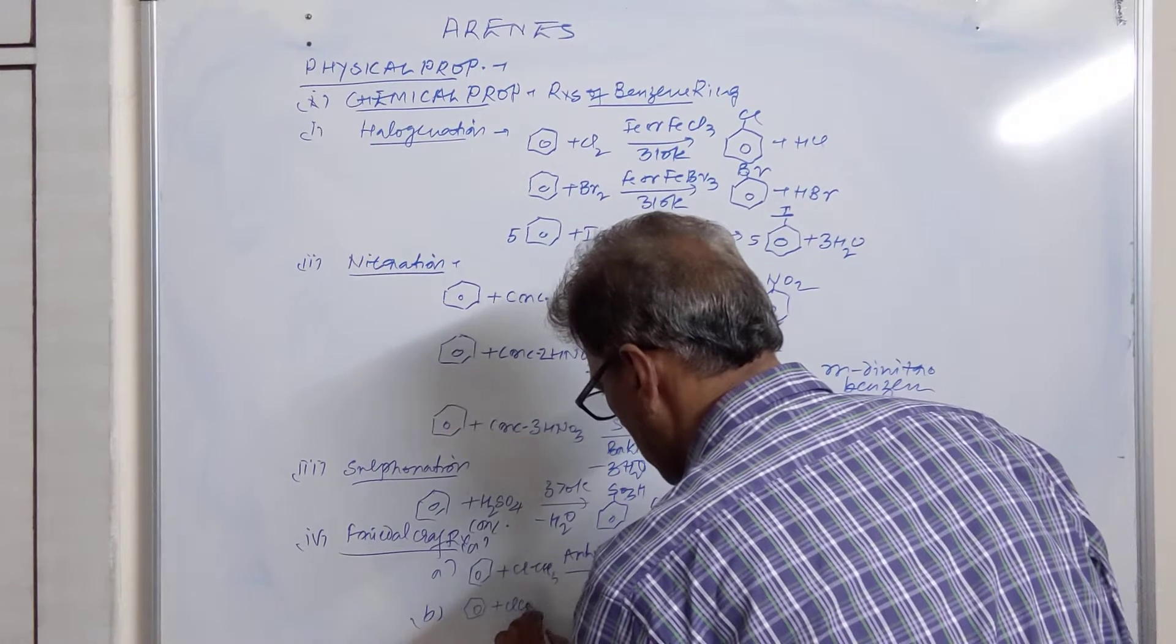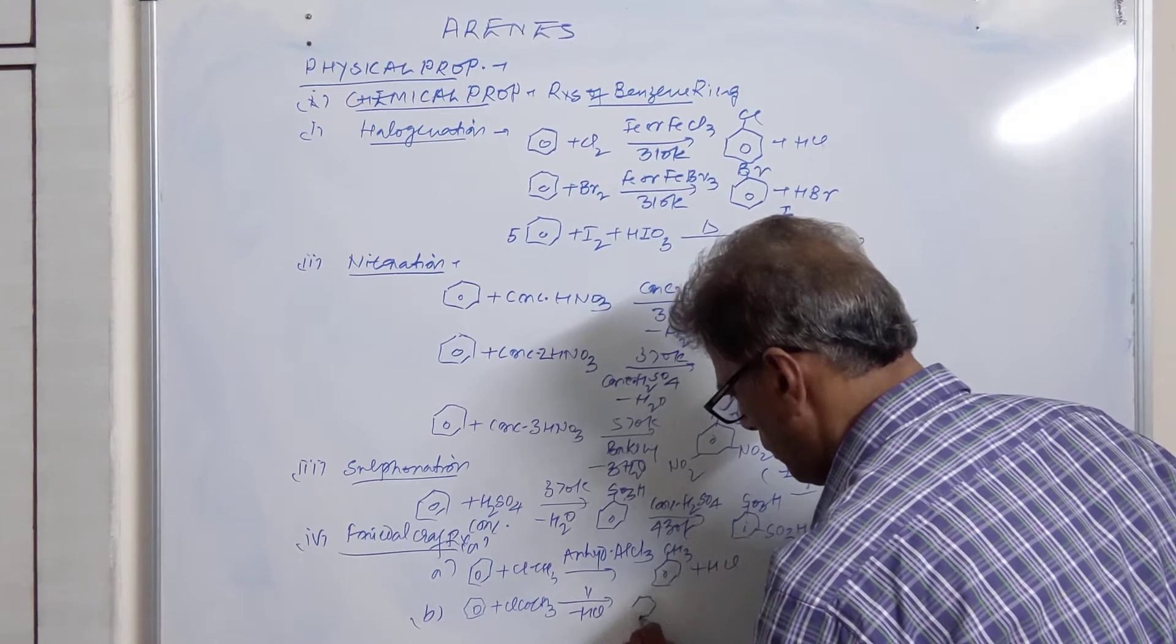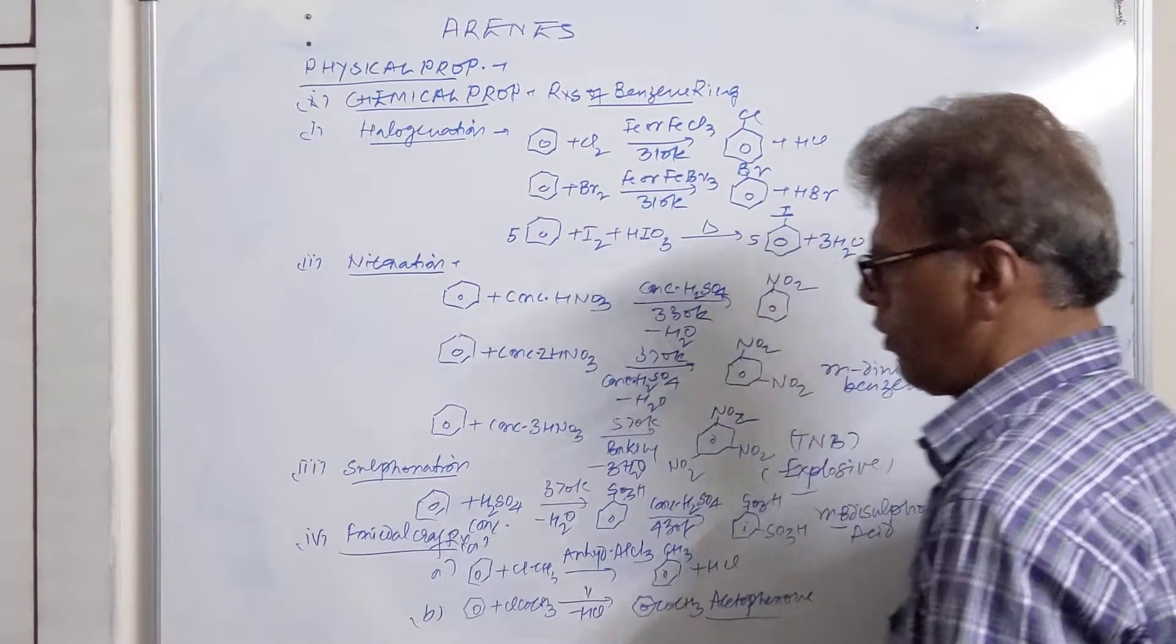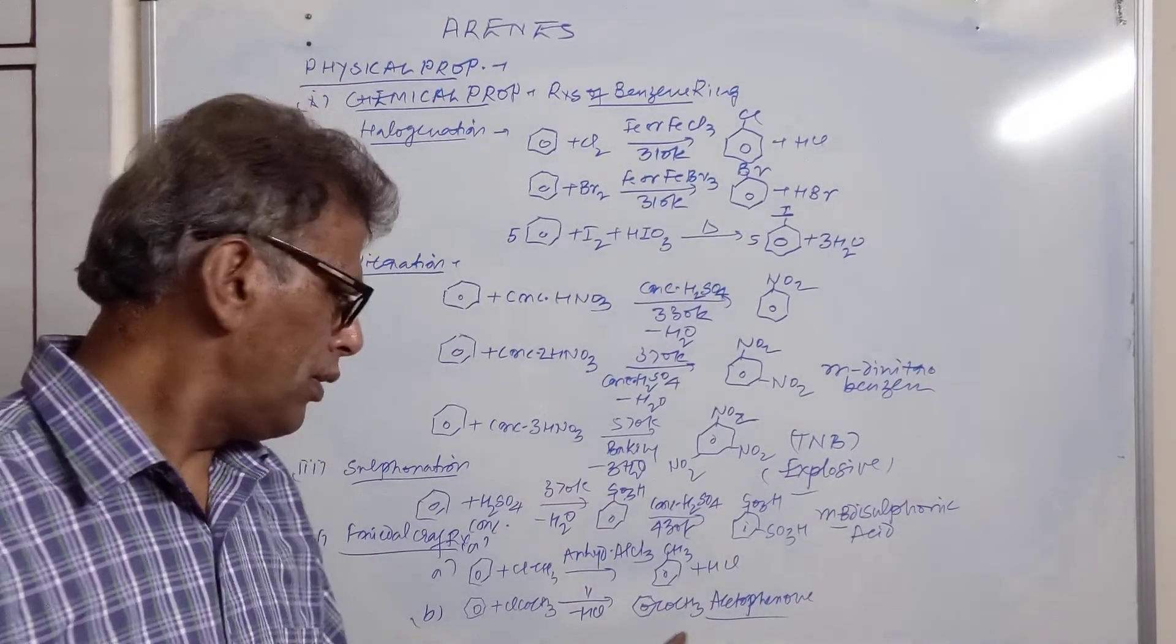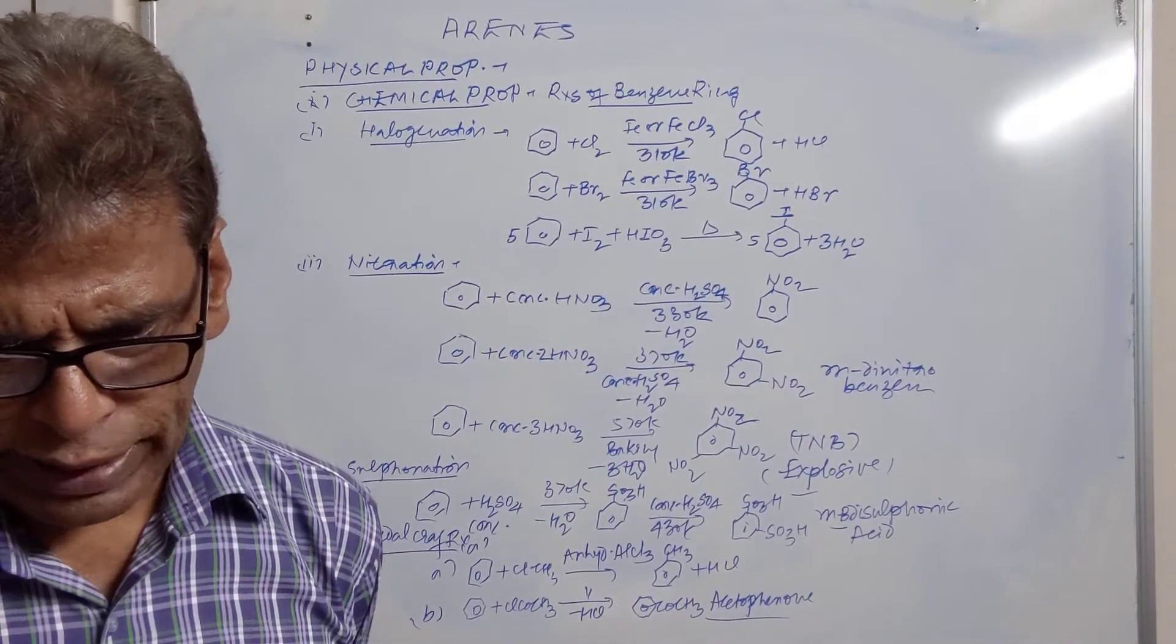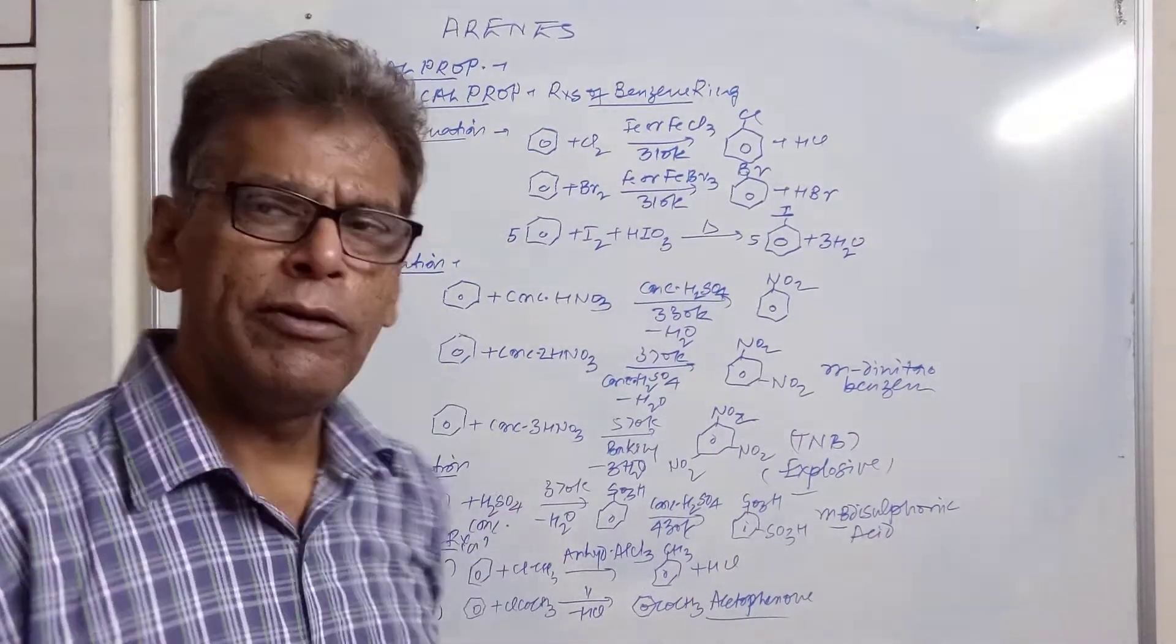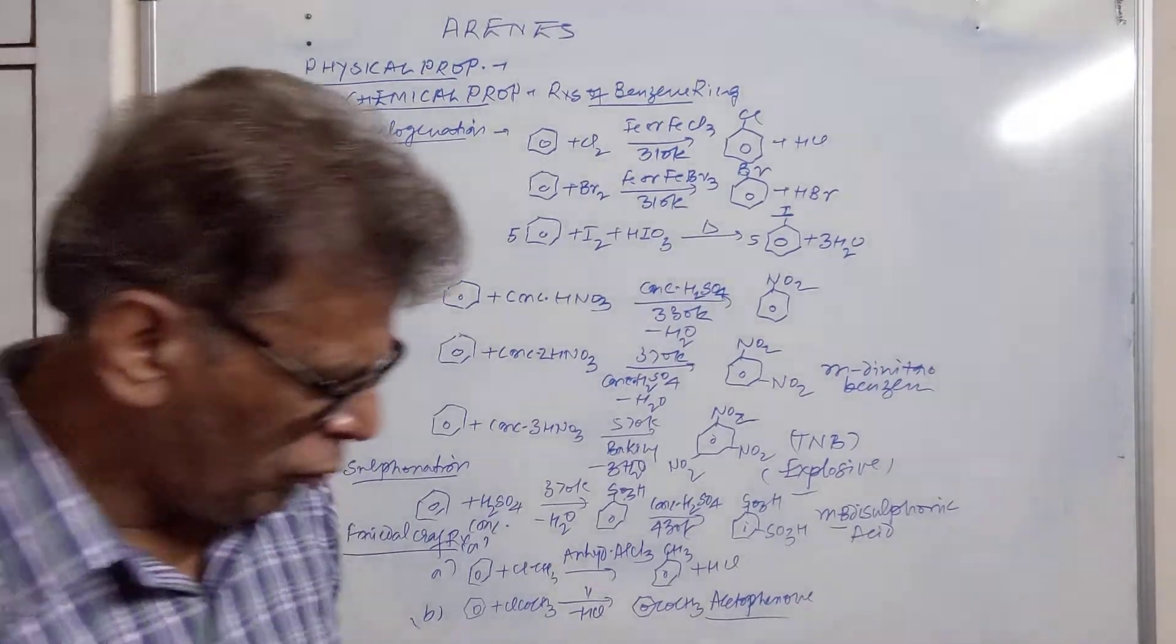Then we have second reaction. Benzene treated with acetyl chloride in the same conditions gives acetophenone. So these are the four properties of benzene ring. Here benzene is producing different compounds. These compounds can also be asked in the conversion. You can be asked for conversions: convert benzene into toluene, benzene into acetophenone, benzene into chlorobenzene and so on.